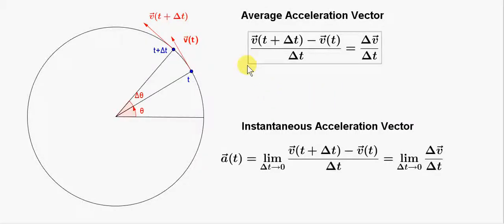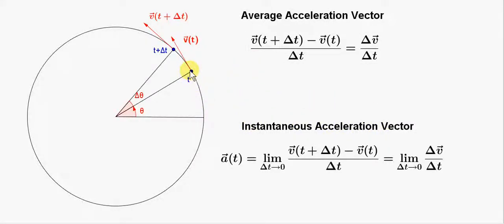In this video, we are going to get the instantaneous acceleration vector of an object undergoing uniform circular motion. Suppose that at time t, the velocity of the object is v of t. Let's suppose that a small interval of time, delta t, elapses.